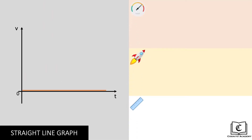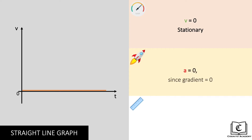The first type of graphs we will be covering are straight line graphs, where gradient and hence acceleration is constant. Let's analyze this graph in terms of its velocity, acceleration, and displacement. Velocity is constant at zero, meaning the object is stationary. Gradient is zero, hence there is no acceleration. Area under the graph is also zero, hence there is zero displacement.